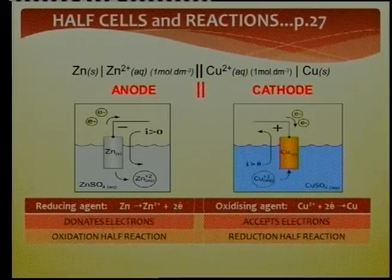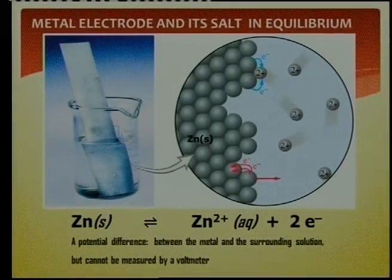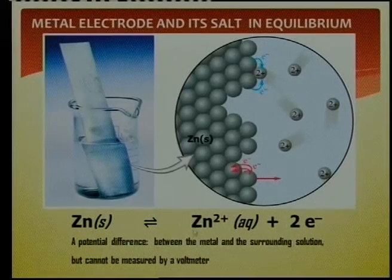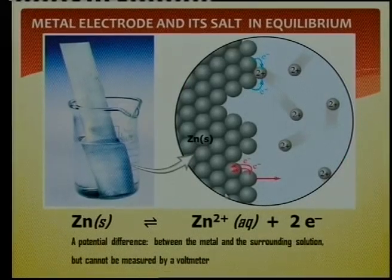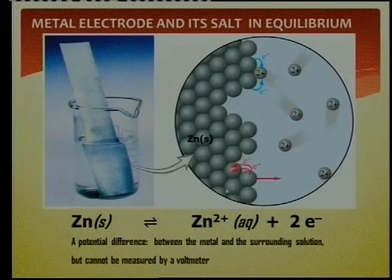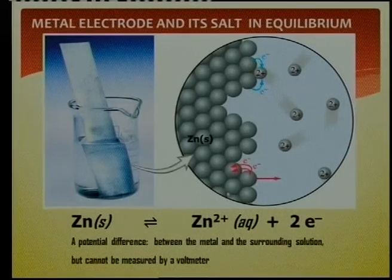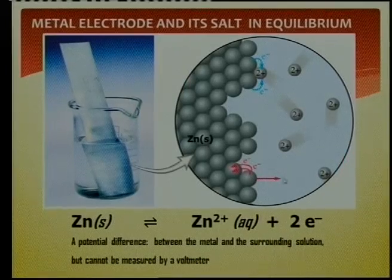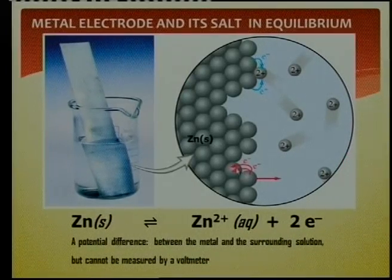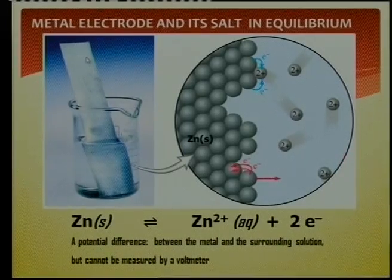On the microscopic scale: here is zinc in zinc sulfate. The zinc atoms go into solution, giving us two electrons. Those electrons move up through the conductor — the electrode. Because this is the loss of electrons, we call this oxidation.